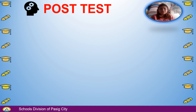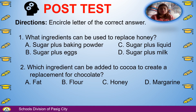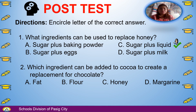Post-test — encircle the letter of the correct answer. Number 1: What ingredients can be used to replace honey? A. Sugar plus baking powder, B. Sugar plus eggs, C. Sugar plus liquid, D. Sugar plus milk.